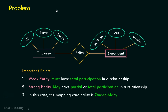Let's have a scenario where we have an entity set 'employee' and an entity set 'dependent.' The employee entity set has ID number as a primary key attribute, employee name, and salary. The dependent entity set has dependent name, age, and gender. The relationship between employee and dependent is the policy relationship.